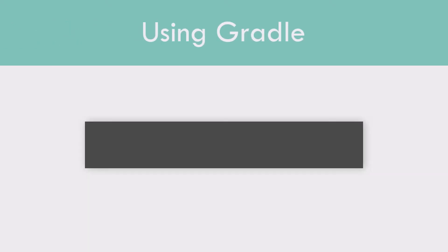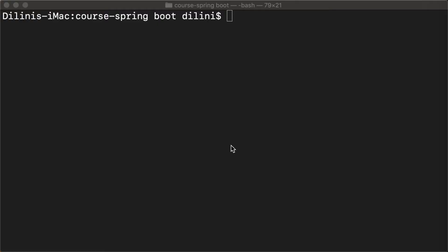Another way of setting up the project is to use the Gradle command line to generate a project and add each of the dependencies to the build file. So if for some reason you decide not to use the Spring Initializer, here's how to set up the project manually using Gradle.